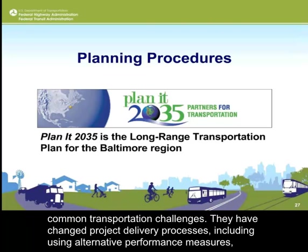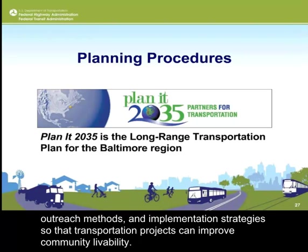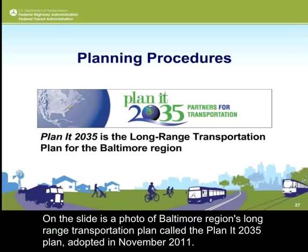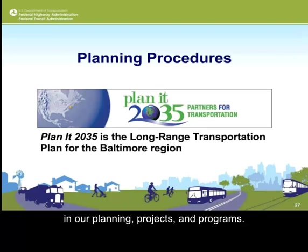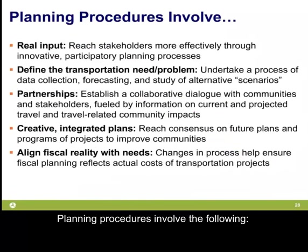Agencies have changed project delivery processes, including using alternative performance measures, outreach methods, and implementation strategies so that transportation projects can improve community livability. Shown on the slide is a photo of the Baltimore region's long-range transportation plan called the Plan 2035, adopted in November 2011. That's really what the livability discussion is about — mainstreaming livability into our goals and everyday activities to provide better outcomes in our planning, projects, and programs.